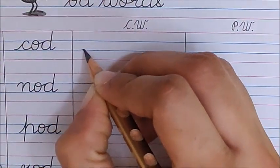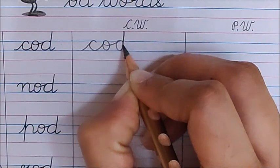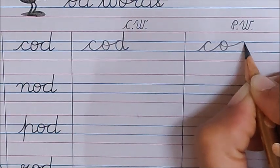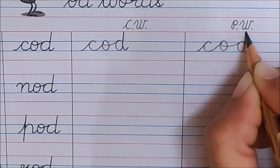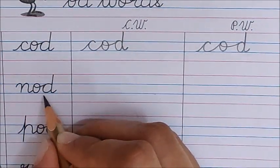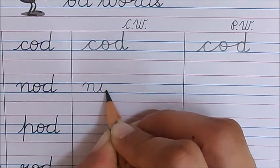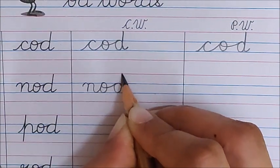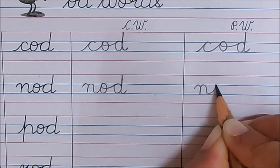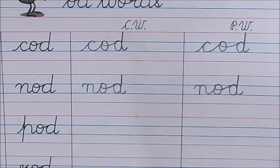Say and write. K. O. D. Cod. One more time. K. O. D. Cod. You must say and write. Next word is nod. N. O. D. Nod. N. O. D. Nod. Good.